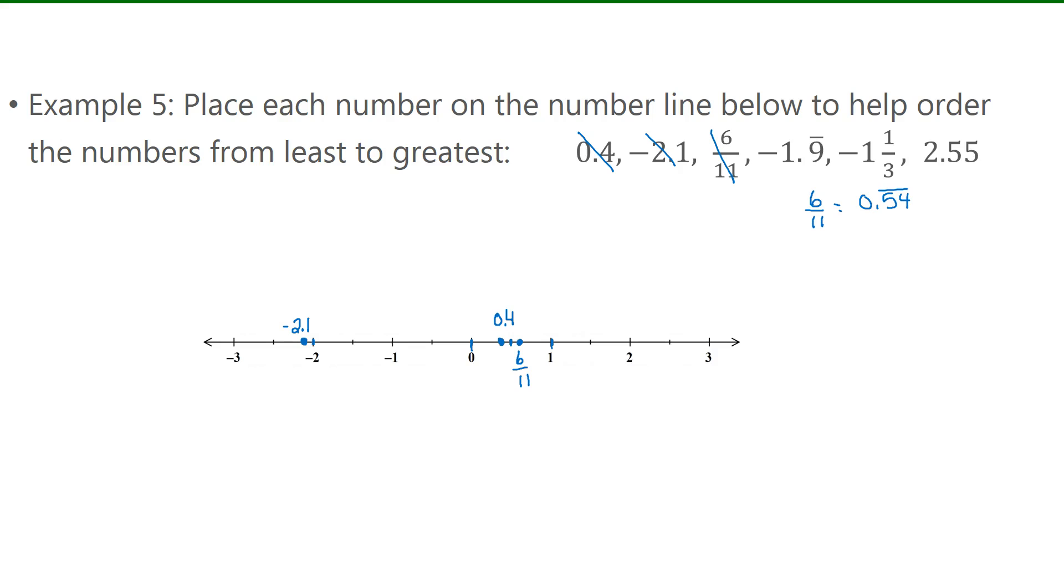Negative 1.999 repeating. That's very close to negative 2. So you can put that on the number line, pretty close to negative 2 there.